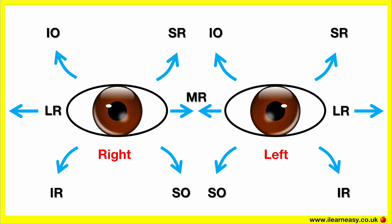The extraocular muscles contain yoke muscle pairs. A yoke movement refers to the coordinated action of a pair of muscles, one in each eye. These work together to produce conjugate eye movements in the same direction. So the yoke muscles are corresponding muscles in the left and right eyes, to move the eyes together in the same direction. This concept is based on Herring's Law of Equal Innervation, which states that when a movement is performed by both eyes together, the yoke muscles receive equal neural input.